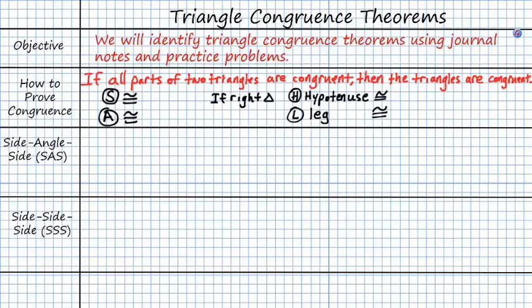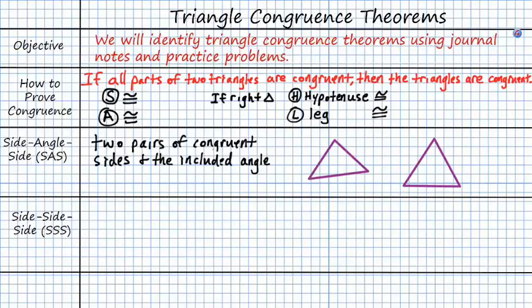We're going to run through all of our theorems, which you saw during your exploration activity. Our first congruence theorem is the side-angle-side theorem, or SAS. That says two pairs of congruent sides and the included angle between the sides will cause congruence. So we have two pairs of congruent sides, and the included angle is the angle that falls in between those two sides — so we go from a side to an angle to a side.